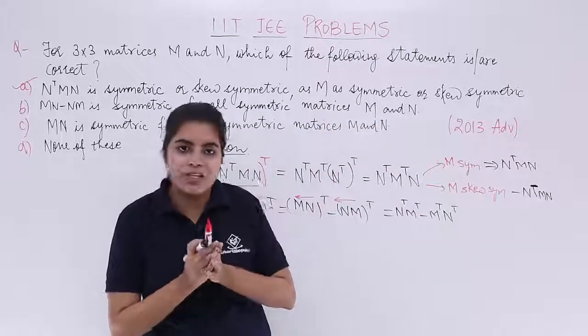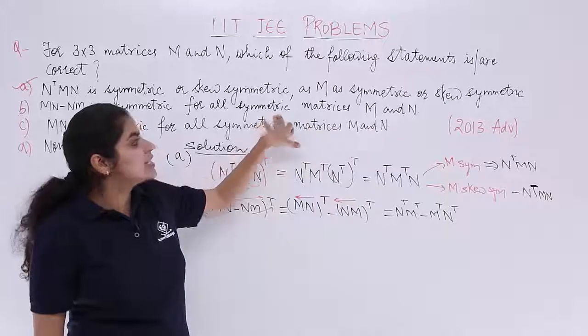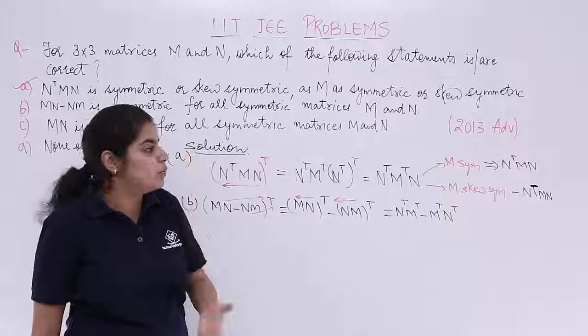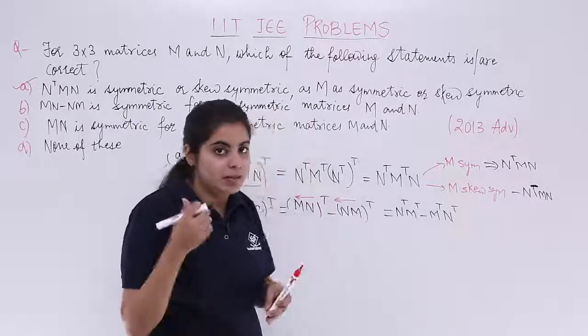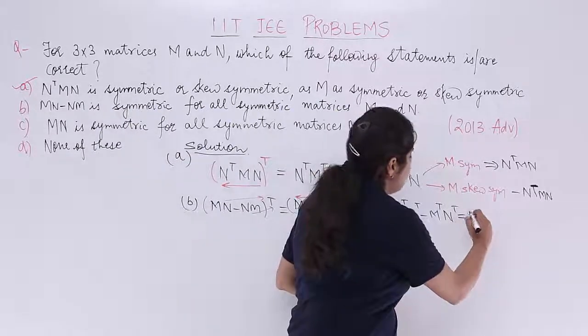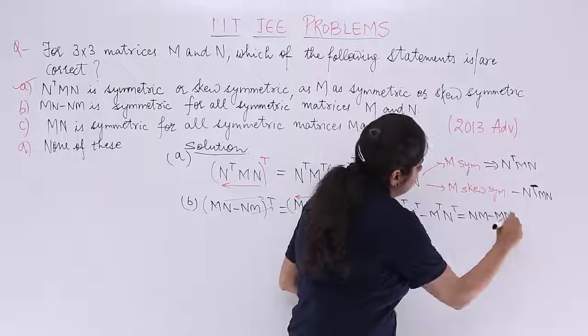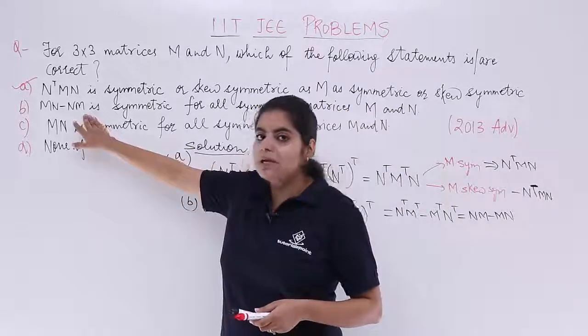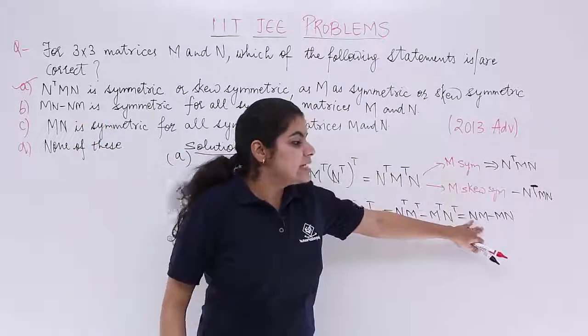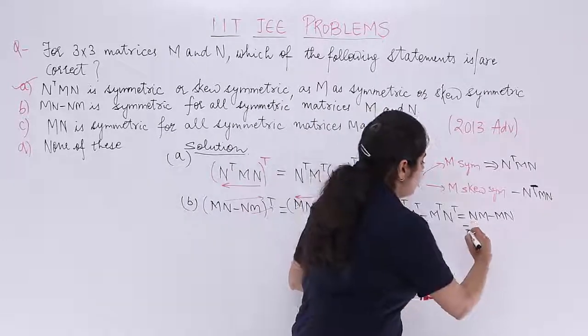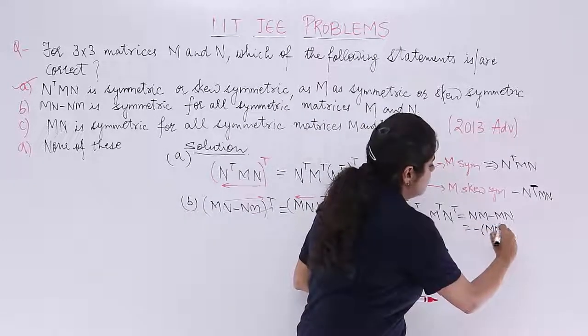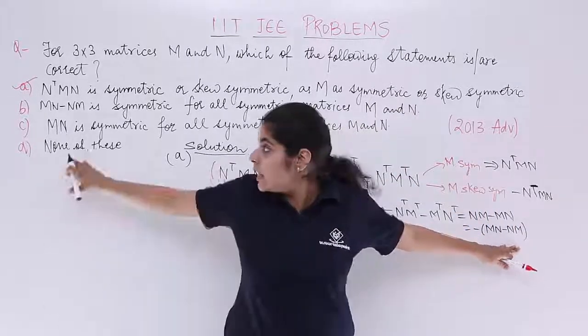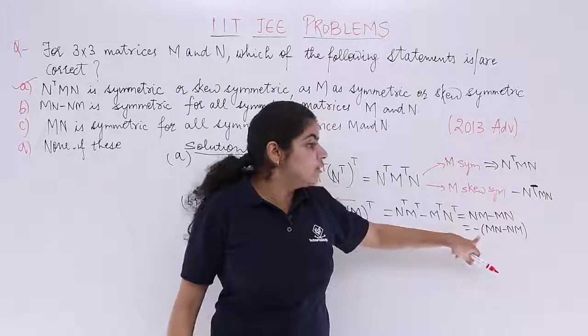What is given to me in the option? It says that these are symmetric matrices. When these are symmetric, M transpose is equal to M, N transpose is equal to N. So it becomes NM minus MN. One more thing into consideration. What was the option? The option was MN minus NM. Here, it is NM minus MN. So you take minus sign common. You have minus of MN minus NM.